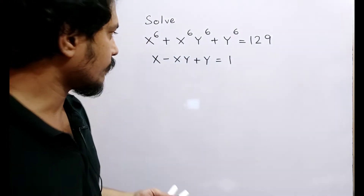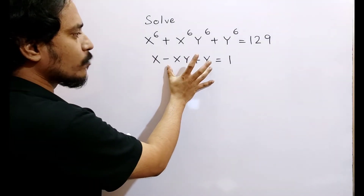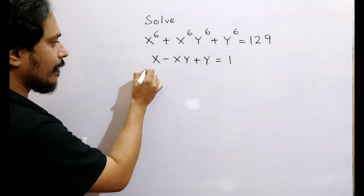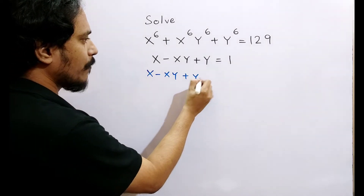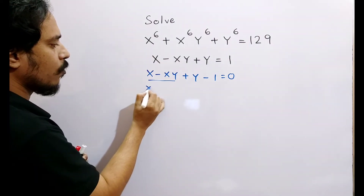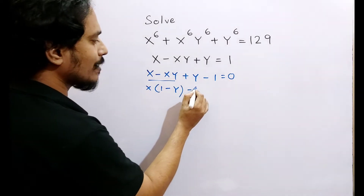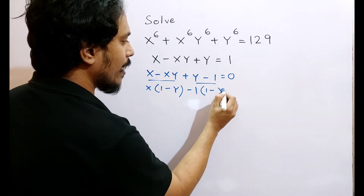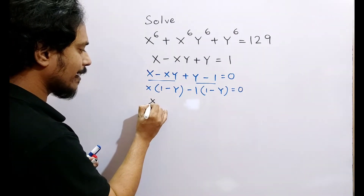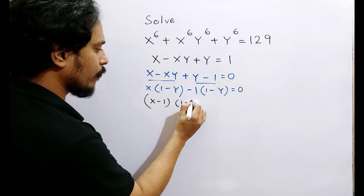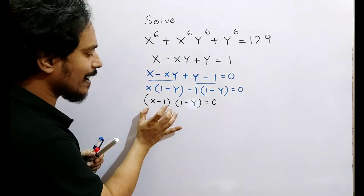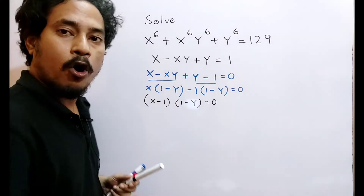Let's solve this question. We pick this equation and write down x minus xy plus y minus 1, which is equal to 0. Take x common from the first two terms to get 1 minus y, and take minus 1 common from the next two terms, which also gives 1 minus y. Now we will get two factors: x minus 1 and 1 minus y, which is equal to 0. The product of these two terms is 0, which means either this term is 0, or this term is 0, or both of them are 0.